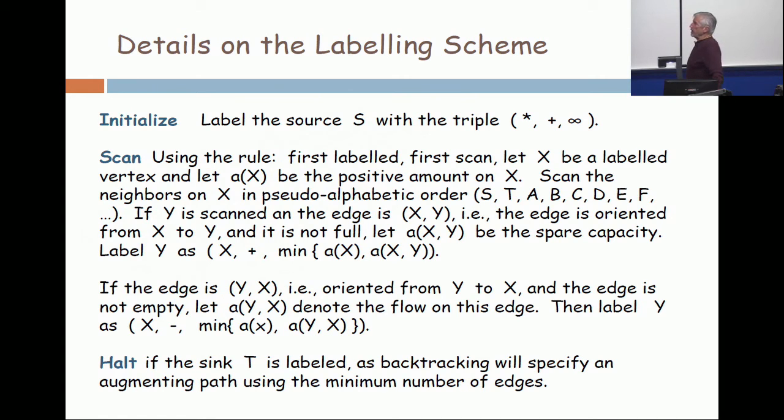If the edge is backwards, and it goes from X to Y backwards, and it's not empty, then we're going to label Y this way. Y gets its label from X, but the second coordinate is negative. That tells me that it goes backwards. The quantity I put on it is the minimum of the amount on X and the excess flow.